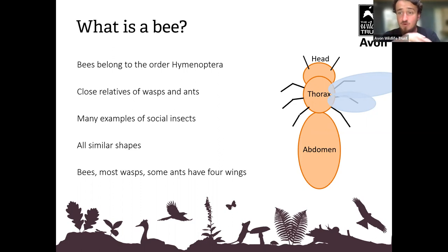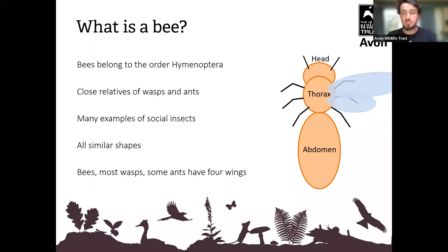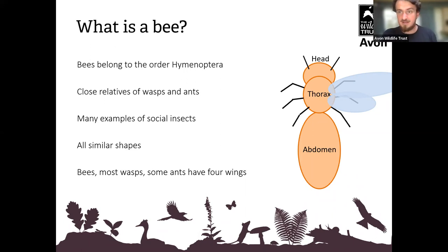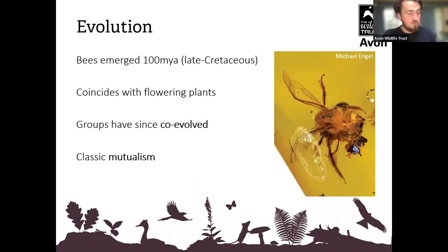Bees have four wings — I know if you look at some cartoons it might appear they've only got two, but that's not true. They tend to move their wings largely simultaneously, but they do have four wings. Most wasps also have four wings, and some ants do too — everybody complains about flying ants when they turn up towards the end of summer.